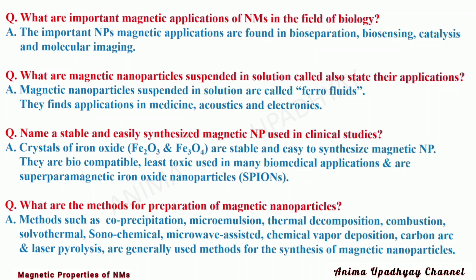What are magnetic nanoparticles suspended in solution called, and what are their applications? Magnetic nanoparticles suspended in solution are called ferrofluids. They find applications in medicine, acoustics, and electronics. Crystals of iron oxide — both Fe2O3 and Fe3O4 — are stable and easy to synthesize magnetic nanoparticles. They are biocompatible, least toxic, used in many biomedical applications, and are superparamagnetic iron oxide nanoparticles, abbreviated as SPIONs.